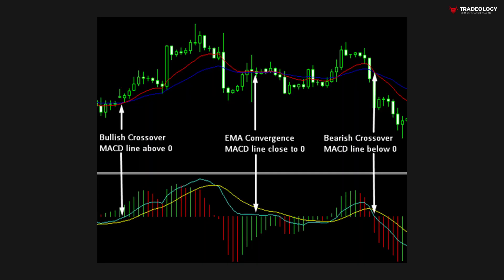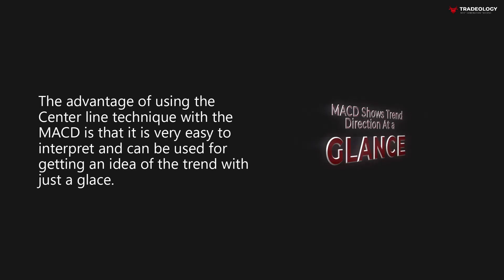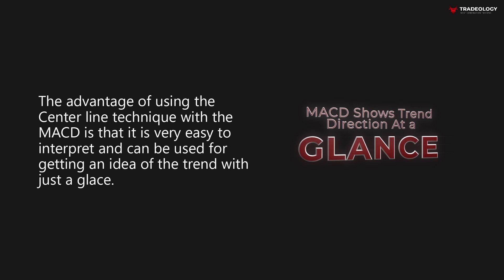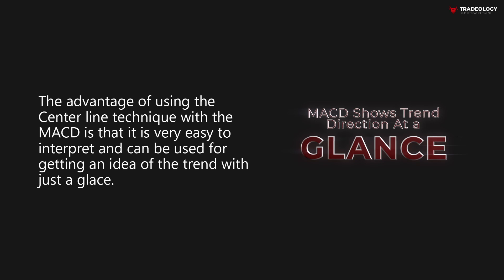In the next image, you'll note how the highlighted crossovers between the 12 EMA (red) and the 26 EMA (blue) of the price coincide with the intersection of the MACD line with the center's zero line. On the left of the image, the bullish crossover moves the MACD line above the zero line. In the center, we have an EMA convergence and the MACD line is close to zero. With the bearish crossover, the MACD line is below zero. The advantage of using the center line technique is that it is very easy to interpret and can be used to identify trend direction at a glance.